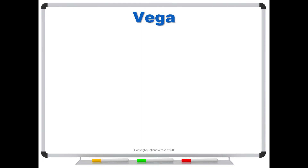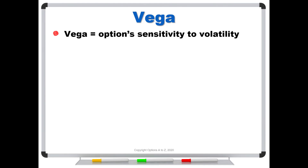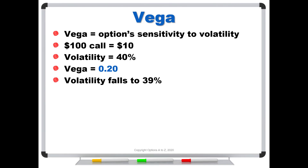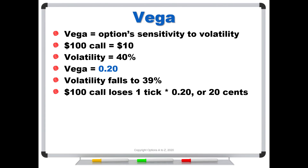Vega is one of the key Greeks for options, and it shows the option's sensitivity to volatility. Let's say you have a $100 call trading for $10 priced at 40% volatility, and your broker's platform shows the vega is 0.2. What this means is that if volatility falls by one percentage point — one tick — falling from 40 to 39, that $100 call loses one tick times vega of 0.2, or $0.20. So that $10 call is going to trade for about $9.80. This assumes all other factors are the same — not that three months has gone by or that the stock price has moved. We're assuming you buy the option at $10 and one second later volatility drops to 39%. That's the effect of about $0.20 on that option.